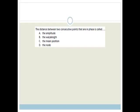Let's get started. It says, the distance between two consecutive points that are in phase is called, so this is just a definition, and what you need to know is that the definition says the wavelength is the distance between two consecutive points in phase.